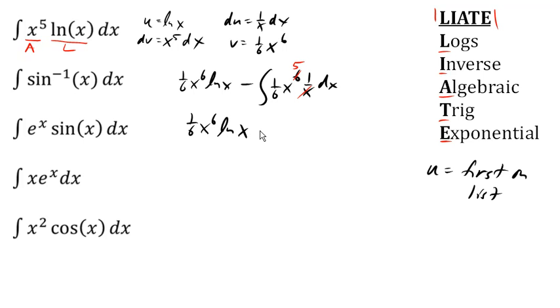So we have our original 1 sixth. Integrating x to the fifth, we get another 1 sixth. And there's our antiderivative. Okay? And so there's the first example.